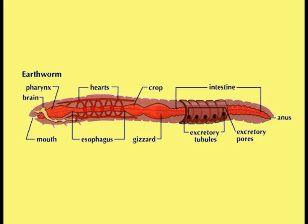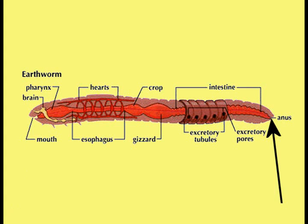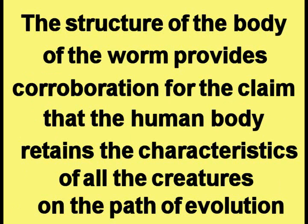A worm is basically a cylinder with a hollow tube in the center penetrating it lengthwise, as shown in this picture. One end of the hollow tube is the mouth, and the other end of the tube is the waste disposal opening. The structure of the body of a worm provides corroboration for the claim that the human body retains the characteristics of all creatures on the path of evolution.